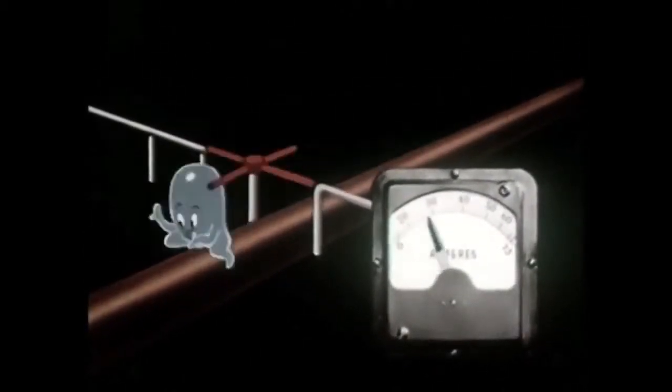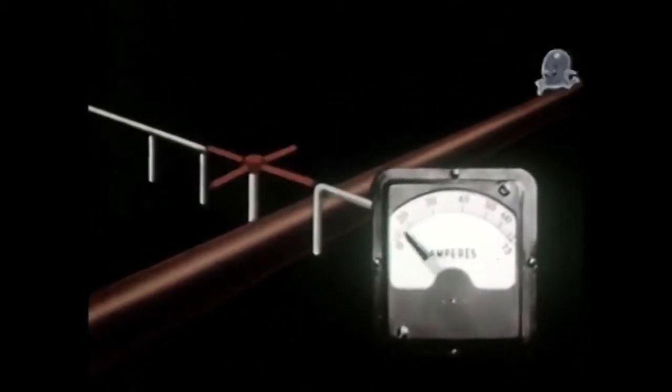Current, or amperage, then, is the number of electrons that pass a given point in a given time.